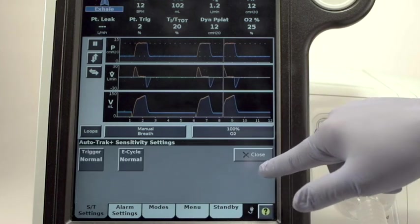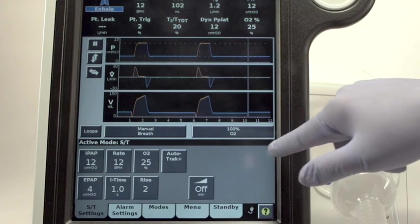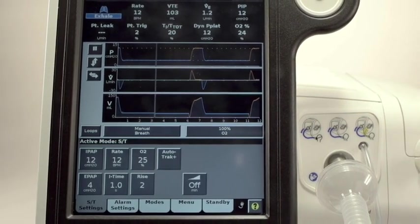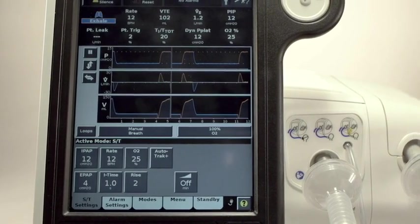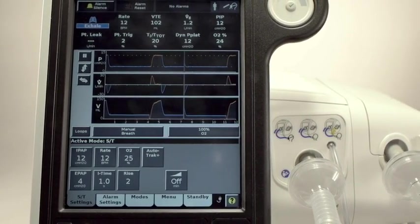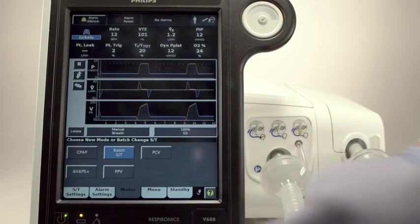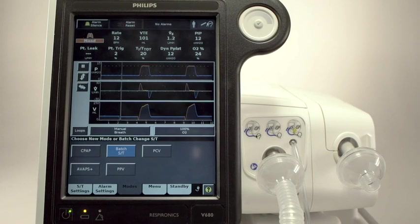Without any adjustments, the default values will be sufficient to manage most patients. However, for the small percentage that may need it, AutoTrack Plus will permit the user to fine-tune the sensitivity and cycling settings. Touch the Modes button and all of the available modes are displayed. These are the exact same modes you find on V60.